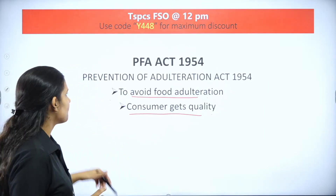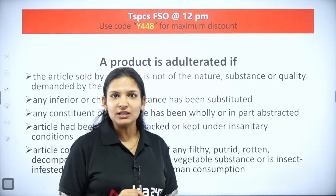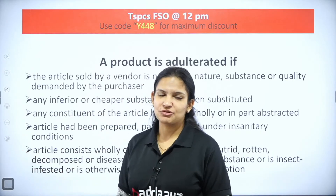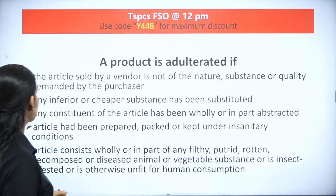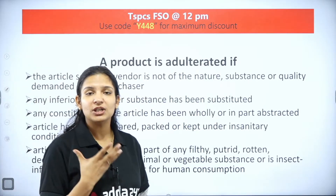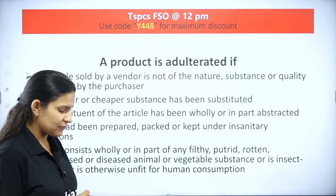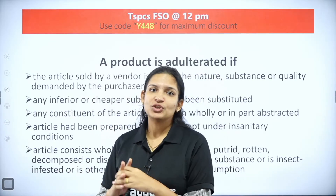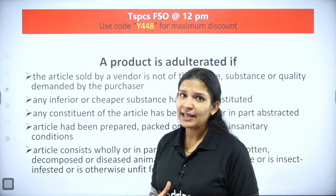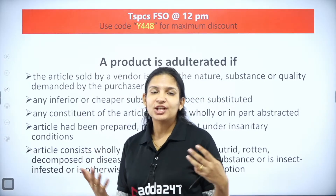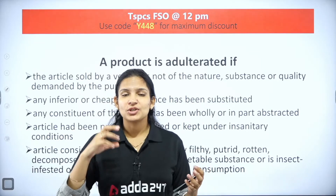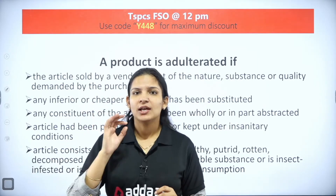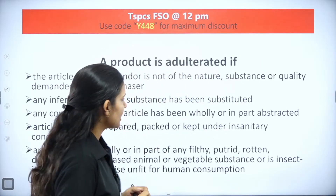Under this act, a product is considered adulterated if certain conditions are fulfilled. The first condition is: the article sold by the vendor is not up to the required nature, substance, or quality. For example, if a vendor making sweets heats them more than required, changing their color or consistency, that product is considered adulterated.